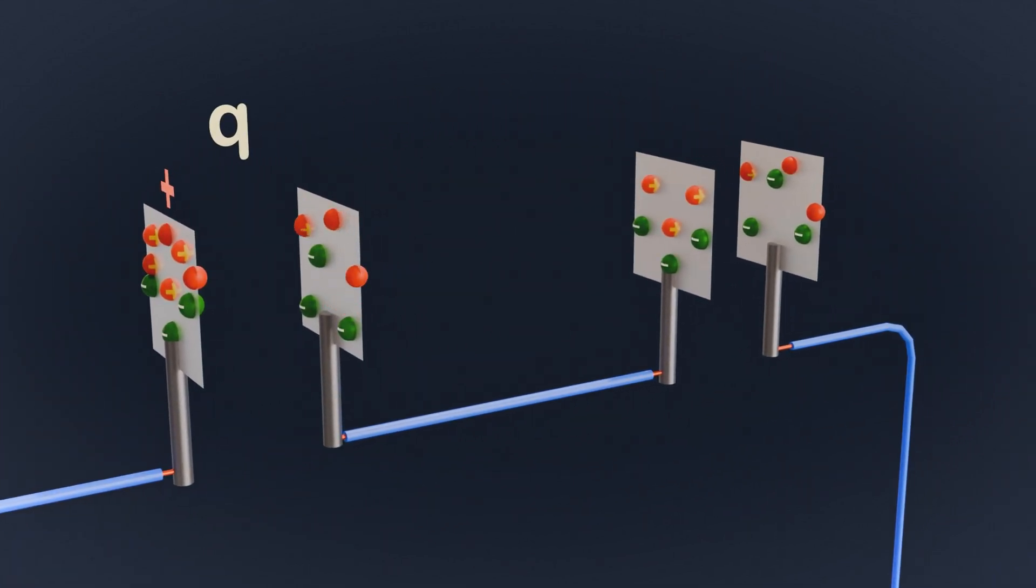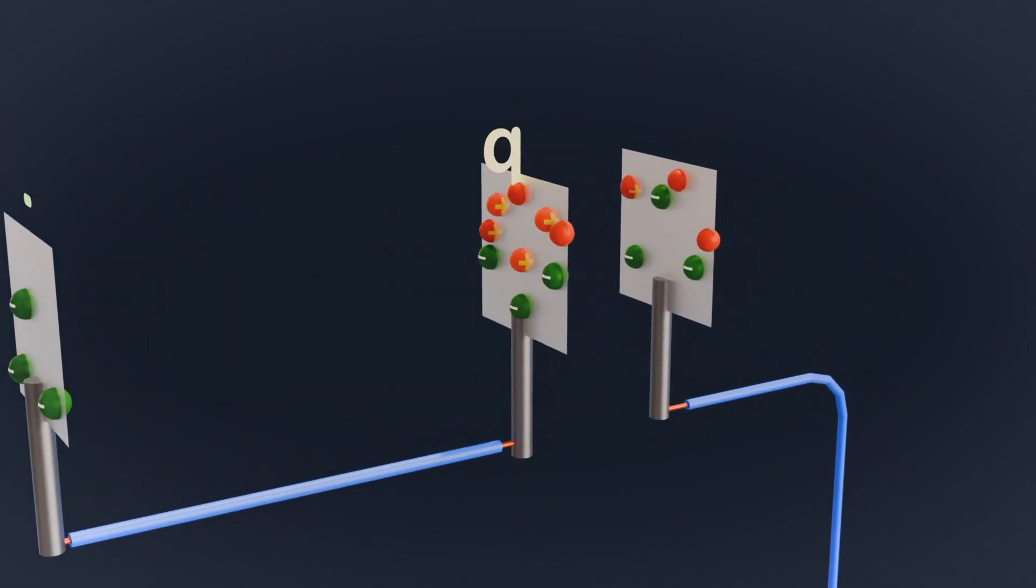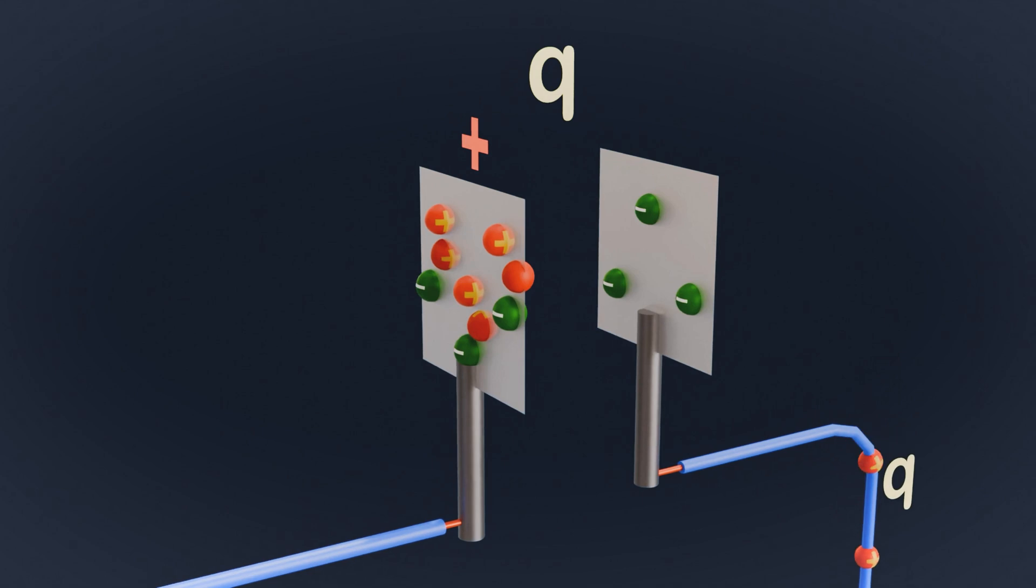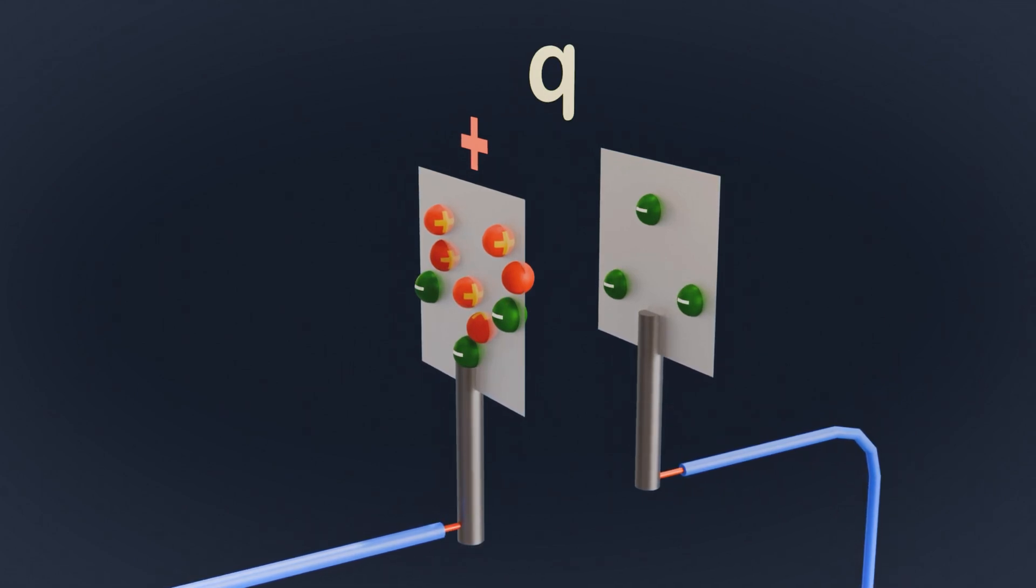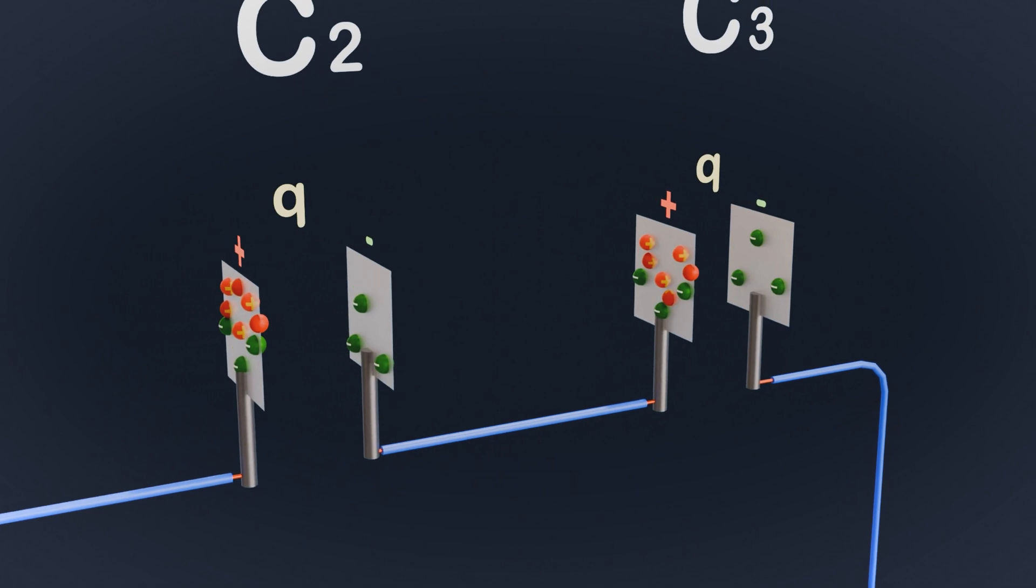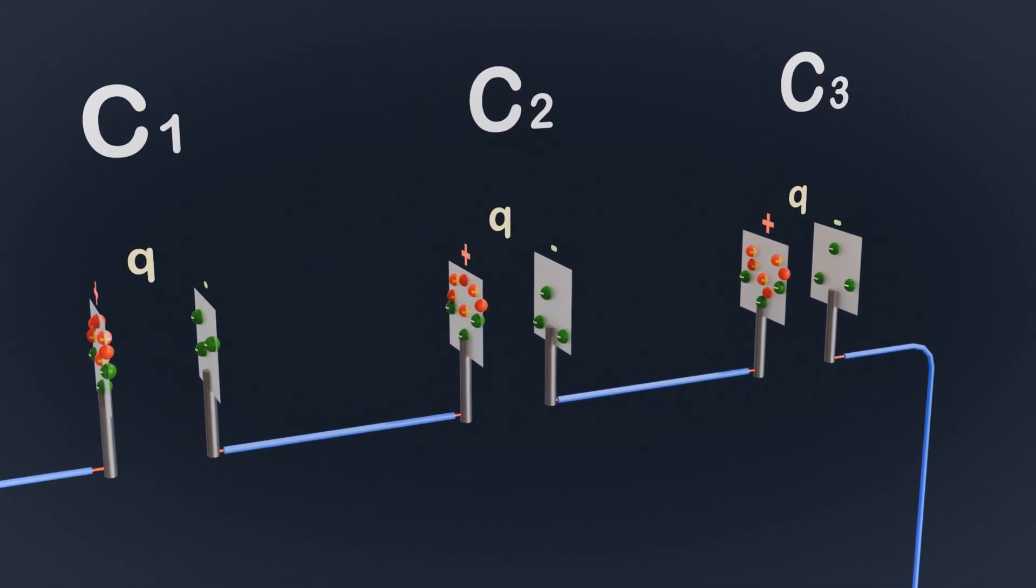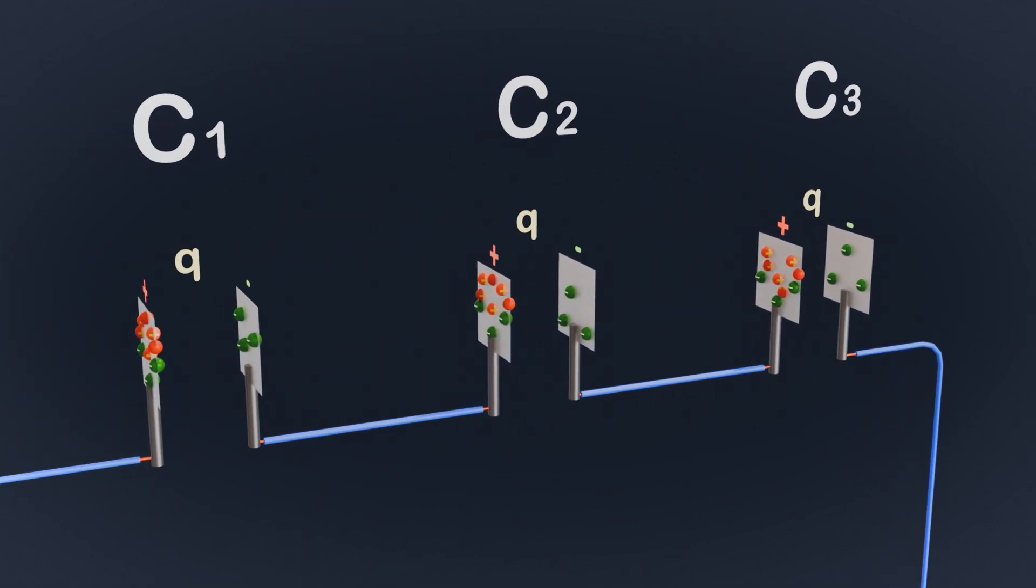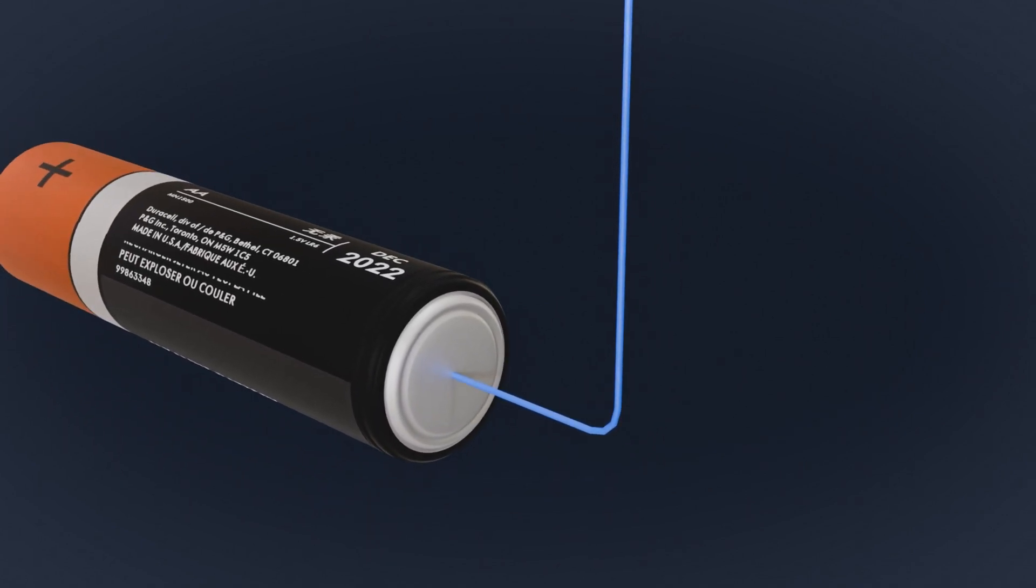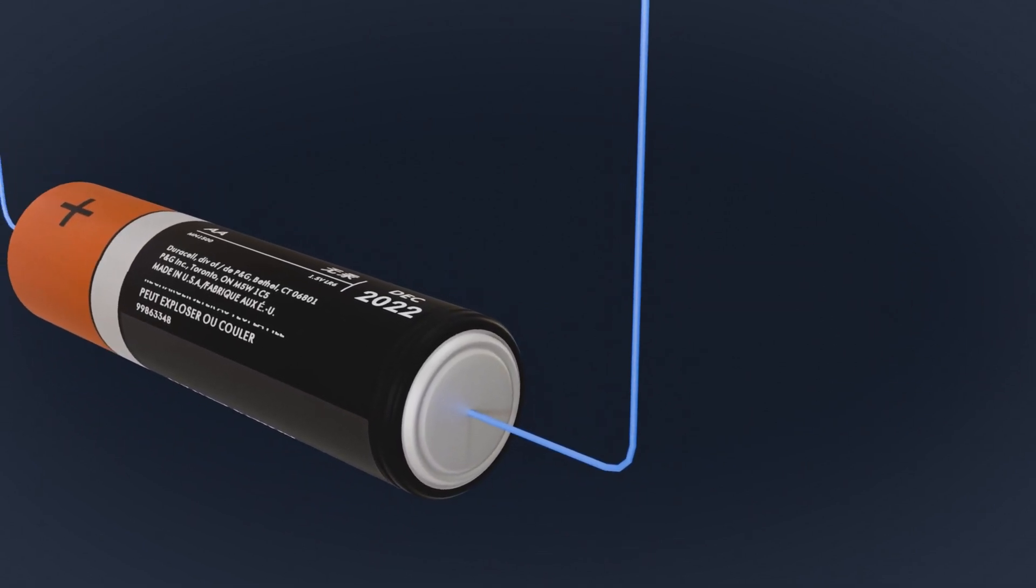Now, the positive charge moves forward to the next capacitor's plate and repeats the process. The positive plate repels the positive charge of the next plate, making it negative. The plate that loses positive charge becomes negative. This chain reaction continues across all capacitors in the series. Finally, when the last capacitor's plate sends its positive charge to the negative terminal of the battery, the circuit is complete.